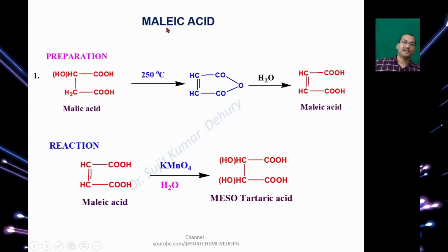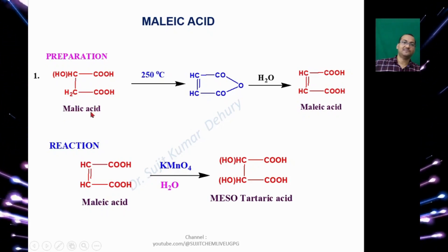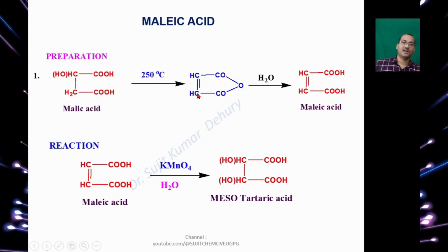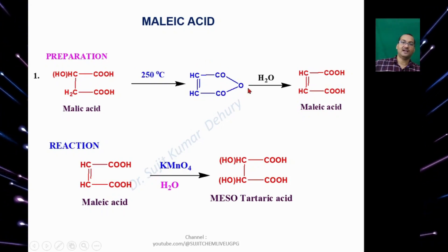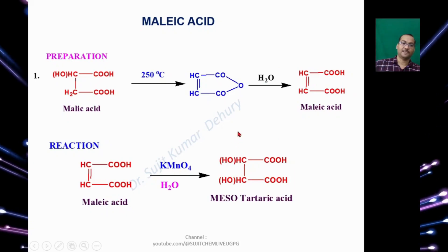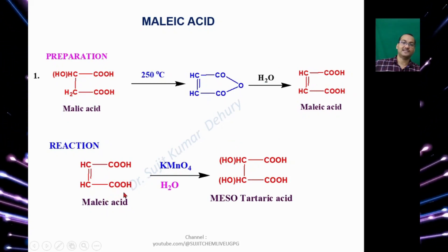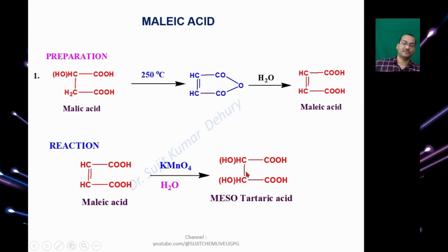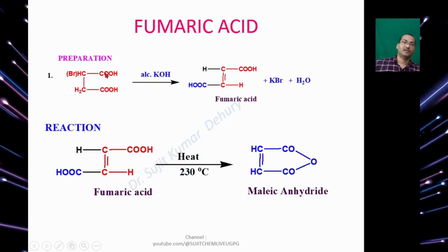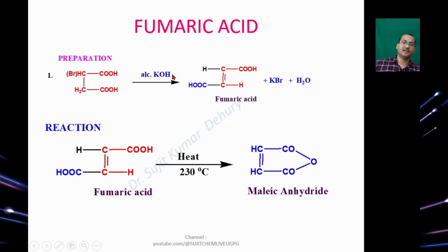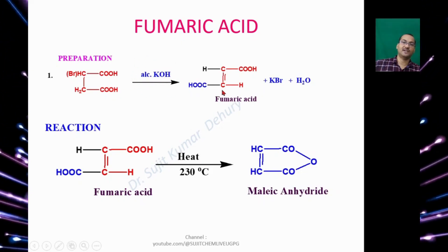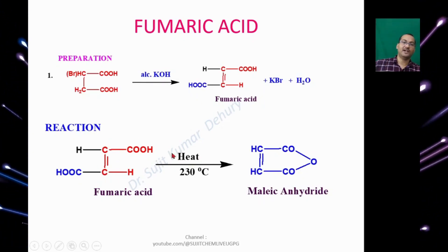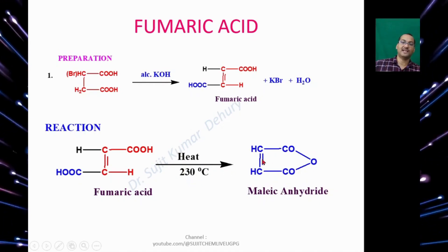How to prepare Maleic Acid: start with Maleic Anhydride (a monohydroxide dicarboxylic acid precursor). Upon heating at 250°C you get Maleic Anhydride, which upon hydrolysis gives Maleic Acid. Maleic Acid reacting with KMnO₄ and water gives Mesotartaric Acid. Starting from a bromodicarboxylic acid and treating with alcoholic KOH gives elimination to Fumaric Acid (the trans form). Fumaric Acid upon heating at 230°C gives Maleic Anhydride.